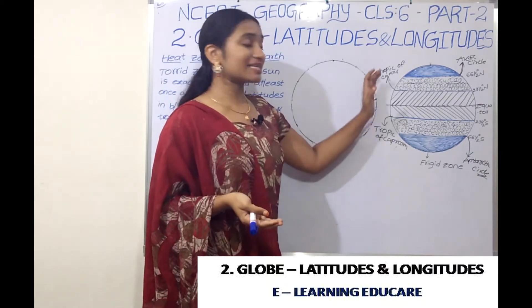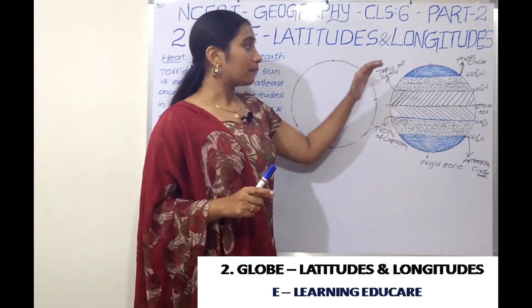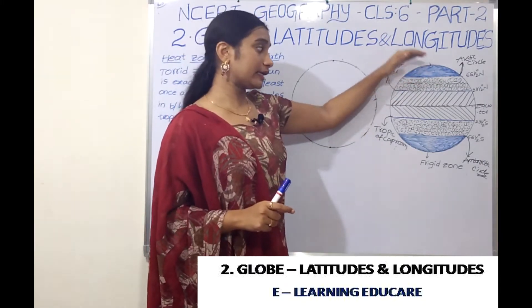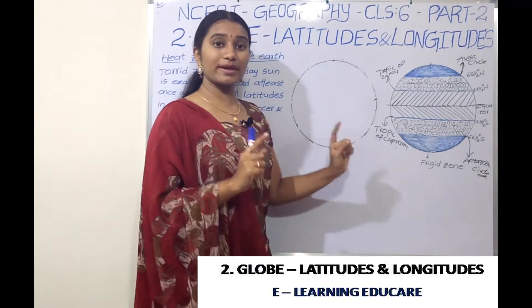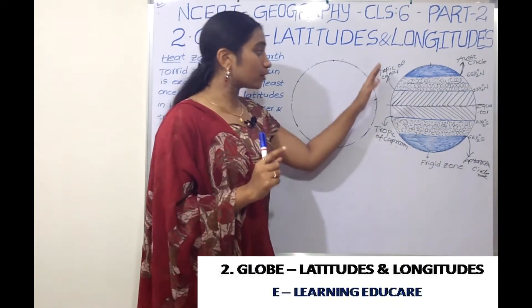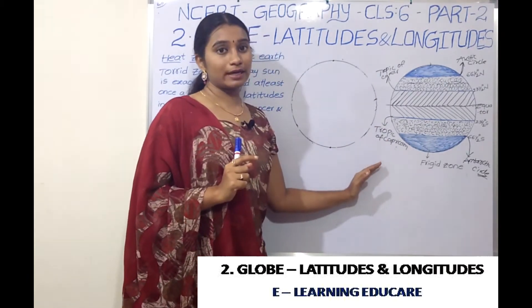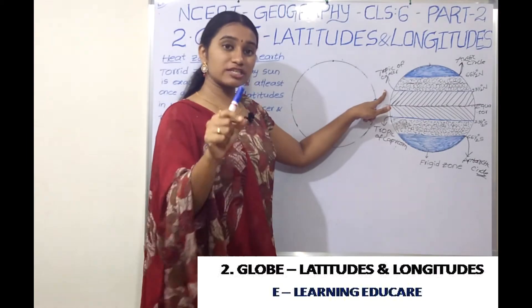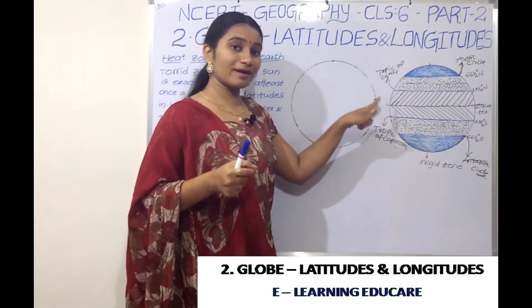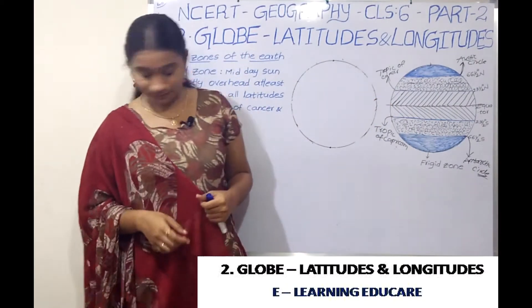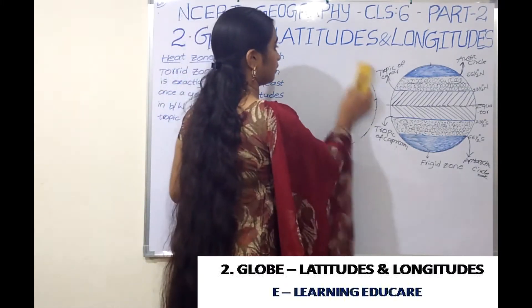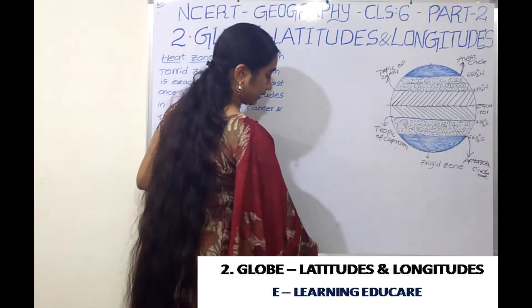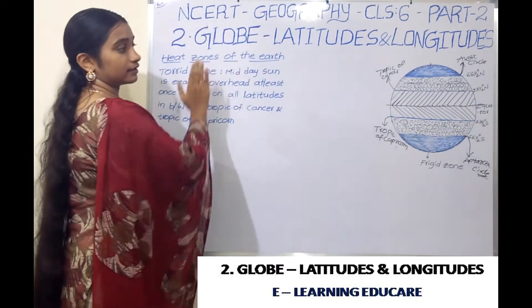So why are these latitudes important? We have 20 degrees, 40 degrees, 60 degrees, 80 degrees — we can divide up to 90 degrees. But why are these four latitudes important? We are going to divide at 23 and a half degrees. So that gives us the heat zones of the Earth.